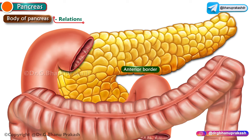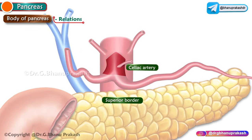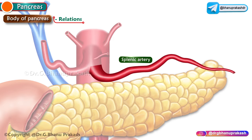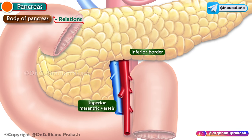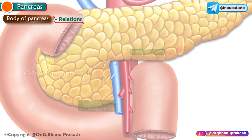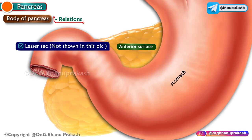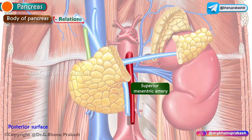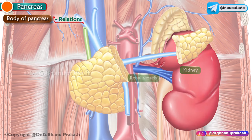The anterior border gives attachment to the root of the transverse mesocolon. The superior border is related to the celiac artery above the tuber omentale, the hepatic artery to the right, and the splenic artery to the left. The inferior border is related to the superior mesenteric vessels. The anterior surface is concave, directed forwards and upwards, and related to the lesser sac and stomach. The posterior surface is devoid of peritoneum and related to the aorta, origin of the superior mesenteric artery, left crus of the diaphragm, left suprarenal gland, left kidney, left renal vessels, and splenic vein.